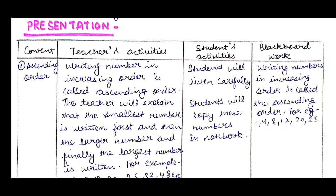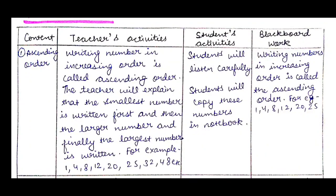Now comes the presentation part. We have four boxes: Content, Teachers' Activities, Students' Activities, Blackboard Work. The content in our first topic is ascending order. Writing numbers in increasing order is called ascending order. The teacher will explain that the smallest number is written first, then the larger number, and finally the largest number. For example: 1, 4, 8, 12, 20, 25, 32, 48, etc. Students will listen carefully and copy these numbers in their notebook. On the blackboard we write: Writing numbers in increasing order is called ascending order. For example: 1, 4, 8, 12, 20, 25.